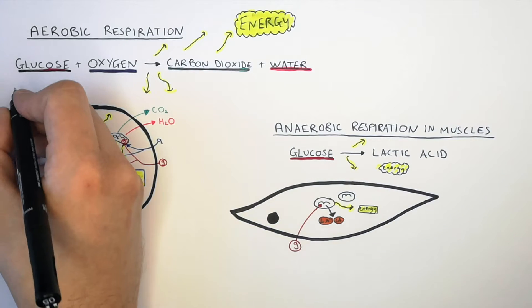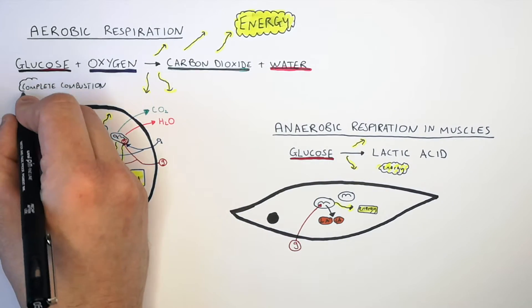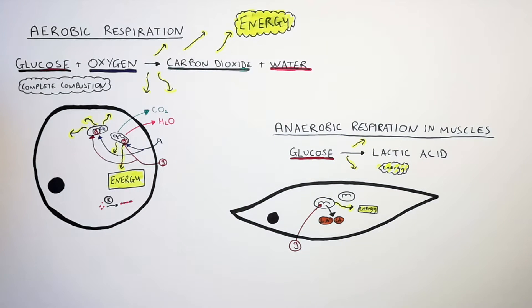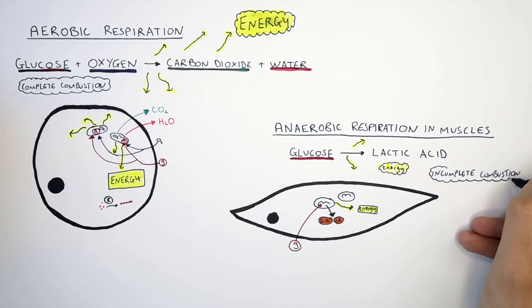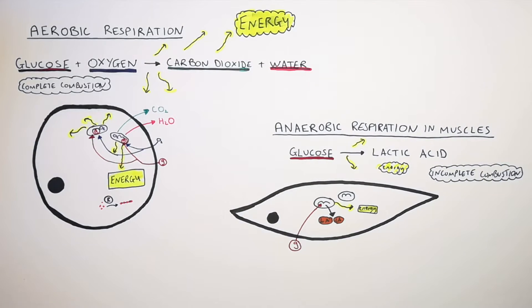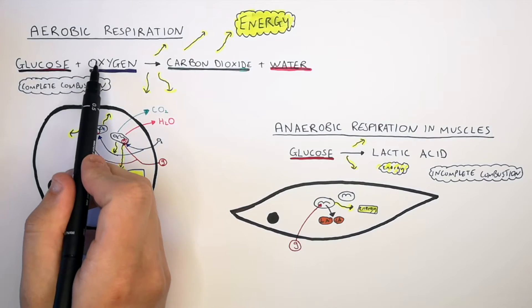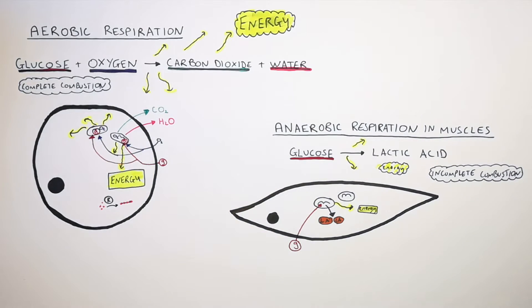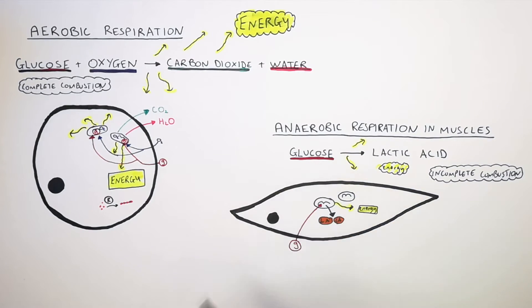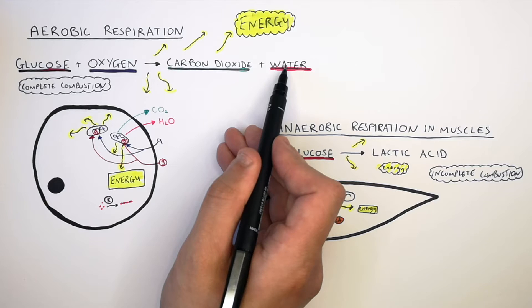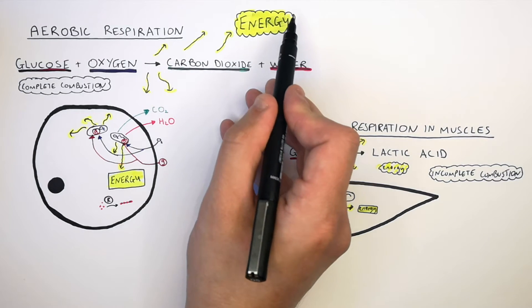So let's go through that again. Aerobic respiration is the complete combustion of glucose in the presence of oxygen. Anaerobic respiration is the incomplete combustion of glucose in the mitochondria. Aerobic respiration uses glucose as the energy source and reacts with oxygen. Anaerobic respiration also uses glucose but not in the presence of oxygen. Carbon dioxide and water are the products of aerobic respiration, and it releases more energy per glucose burned.